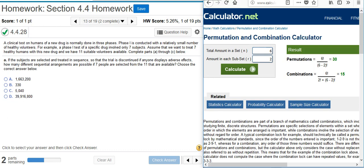Part A says: If the subjects are selected and treated in sequence, so that the trial is discontinued if anyone displays adverse effects, how many different sequential arrangements are possible if seven people are selected from the eleven that are available? Choose the correct answer below.